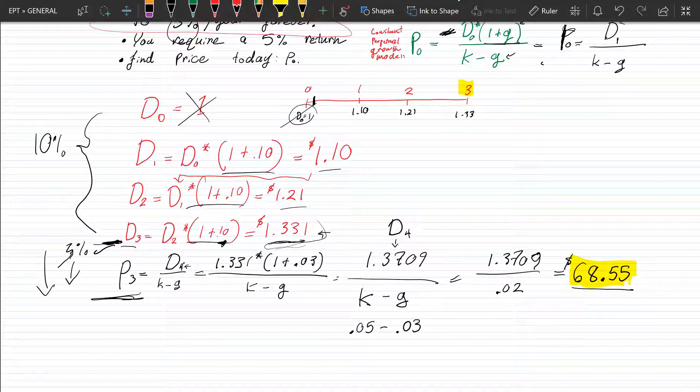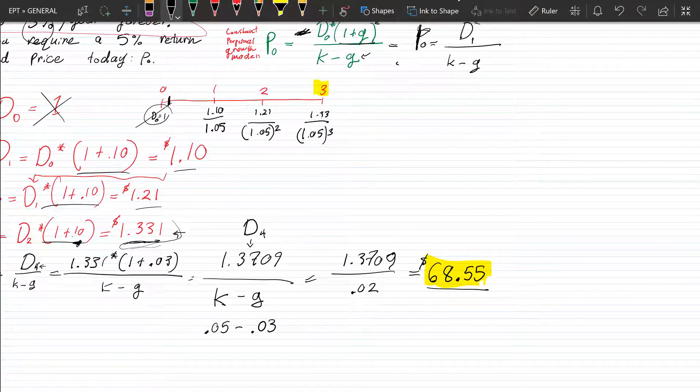So we know we have to discount these dividends, right? By your required rate of return of 5%. So we know that it's here. 1.05. Discount that. 1.05 to the second power for term two. And then we have 1.05 to the third power for the third year. But we also have this.